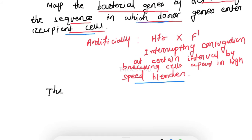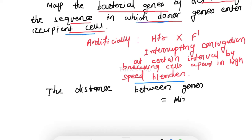The relative distance between the genes — the genes that are transported from the donor to the recipient — is shown in minutes. As mentioned, for transferring the whole E. coli chromosome from donor to recipient it takes around 100 minutes, so the distance between genes is expressed in minutes.